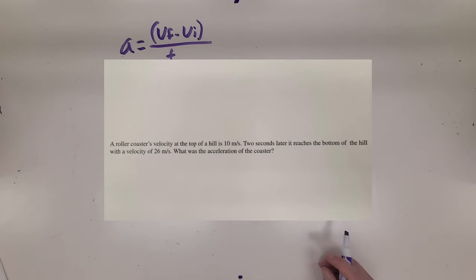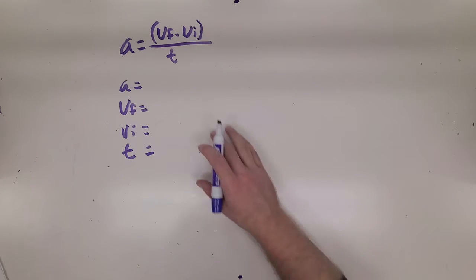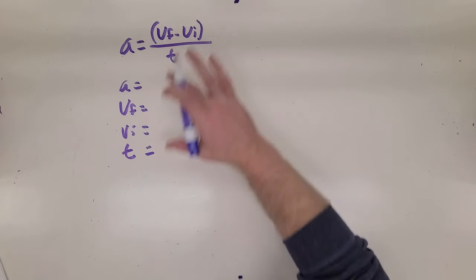Okay, for this first problem we're looking at a roller coaster's velocity. A roller coaster velocity at the top of a hill is 10 meters per second. Two seconds later it reaches the bottom of the hill with a velocity of 26 meters per second. What was the acceleration of the coaster? First to solve this problem we are going to need to know what our equation is. We have it written right here.